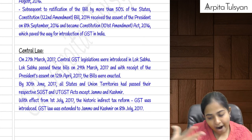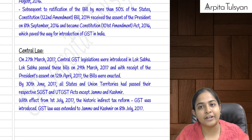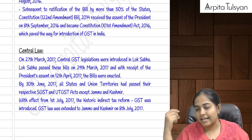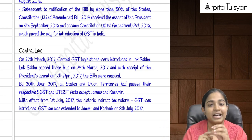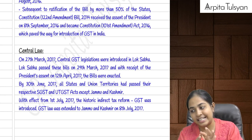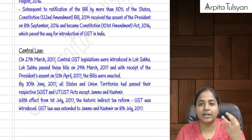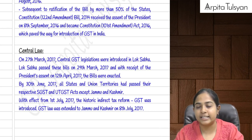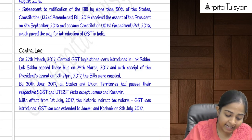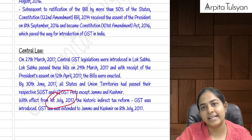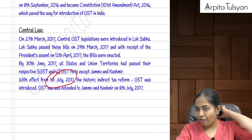Once the Constitution Amendment Act was passed in September 2016, they started introducing GST legislations. The Central GST legislation was introduced in Lok Sabha, then Rajya Sabha, then President's assent was received. After the central law was passed, states and union territories introduced their respective laws — SGST and UTGST — and with effect from 1st July 2017 this GST law came into picture.